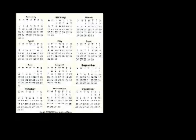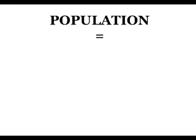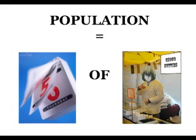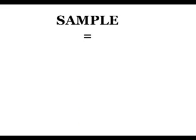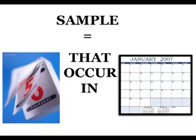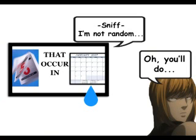From this month of trials she will have a sample that can be used to draw conclusions about days in the future. The population in this instance is all days of selling choco-nutties. The sample is the days that occur in the next month. This is not a random sample, but it's all we can do in this instance.